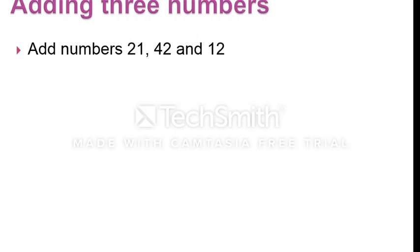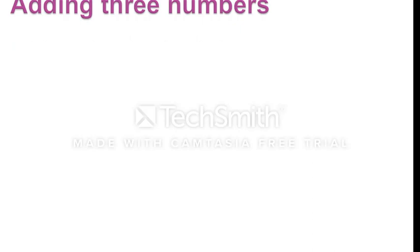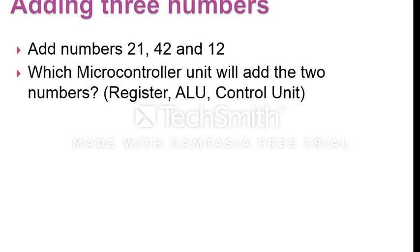For example, adding three numbers — suppose we add 21, 42, and 12. Now a quiz: which microcontroller unit adds two numbers? Option A: registers. Option B: ALU. Option C: control unit. I hope many of you answered correctly — it is the ALU.